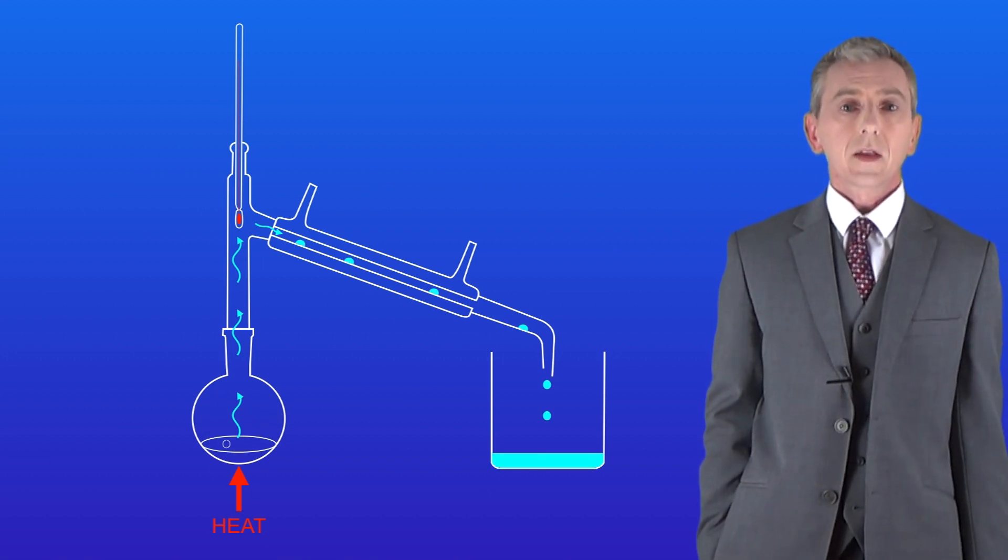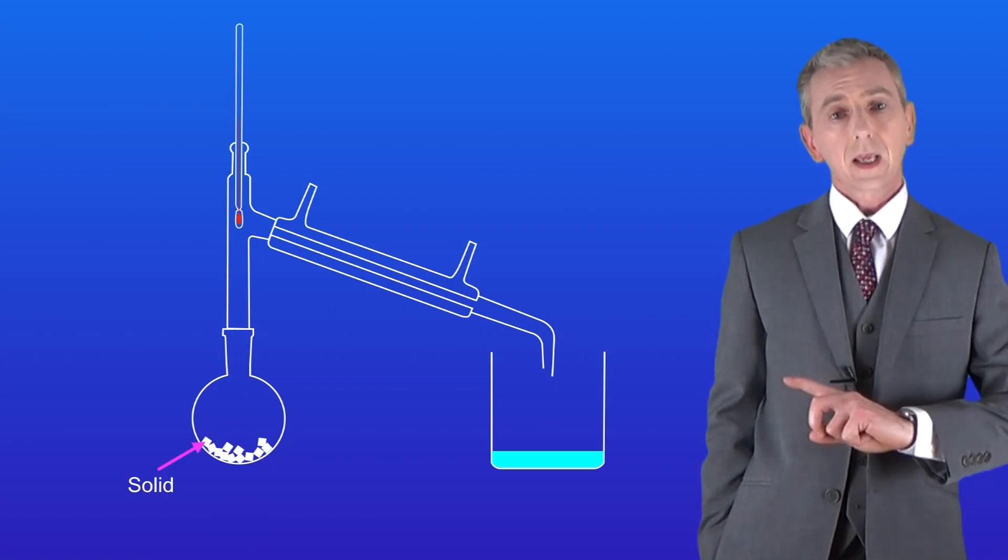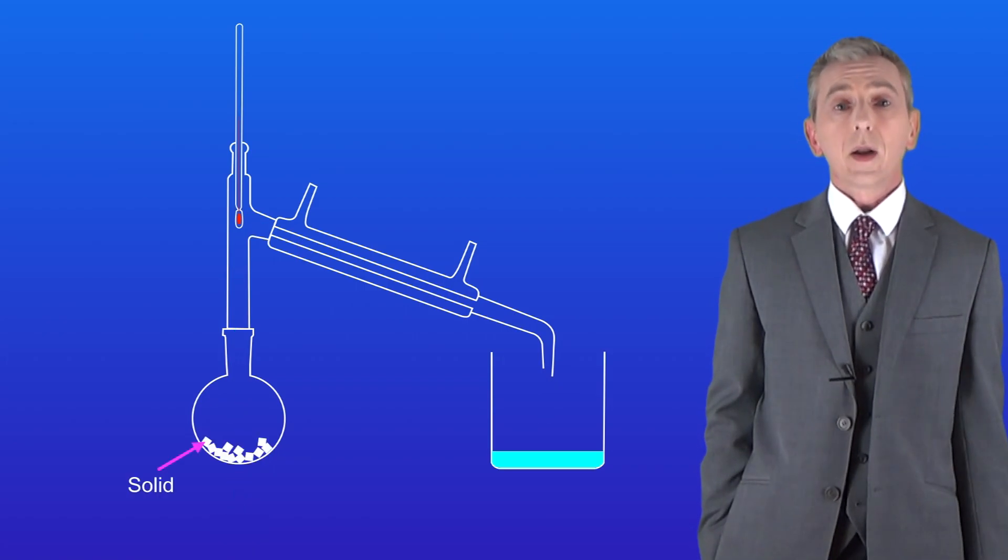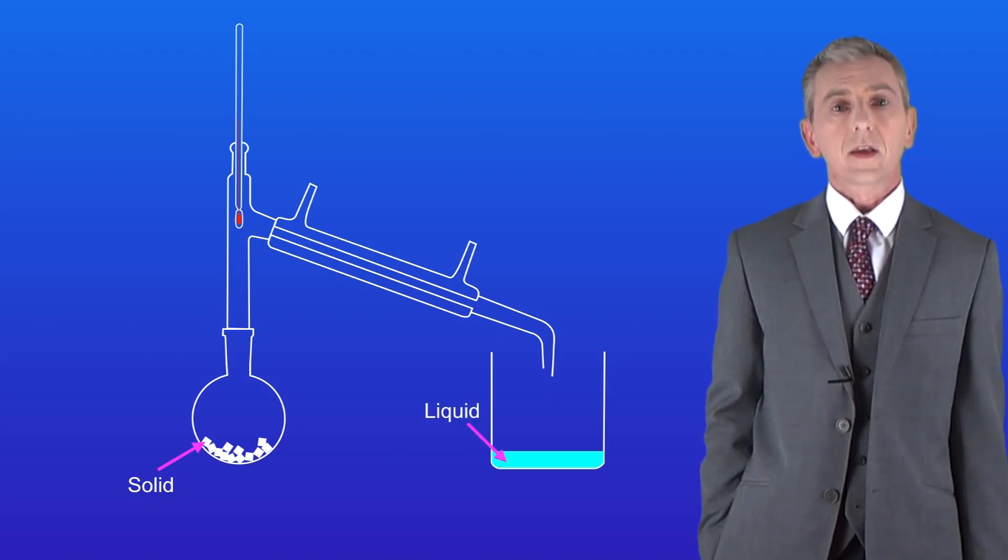We can collect the liquid in our beaker. So at the end we're left with crystals of our solid in the flask here and our liquid is in the beaker here. So that's simple distillation.